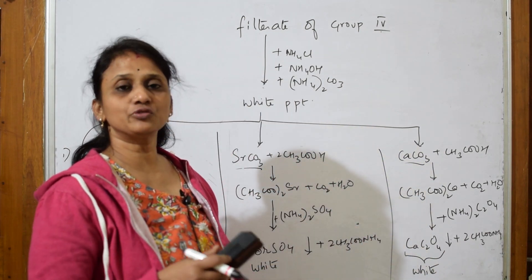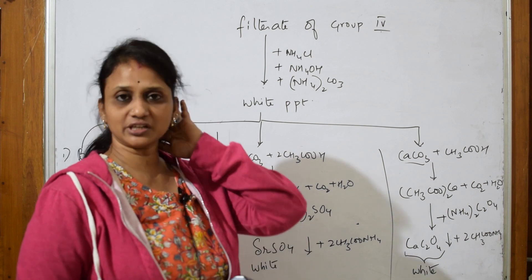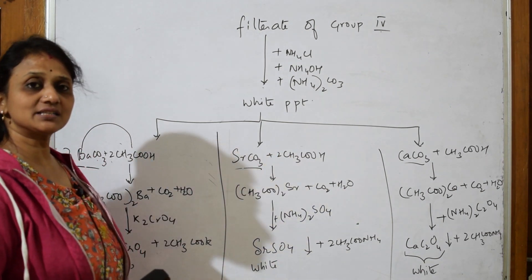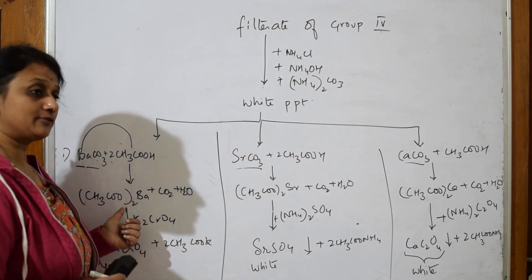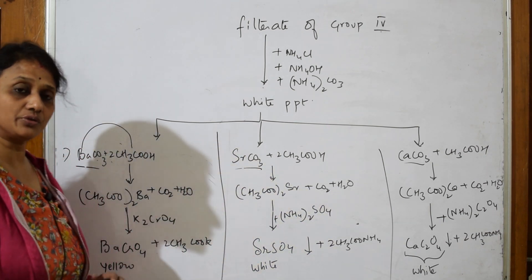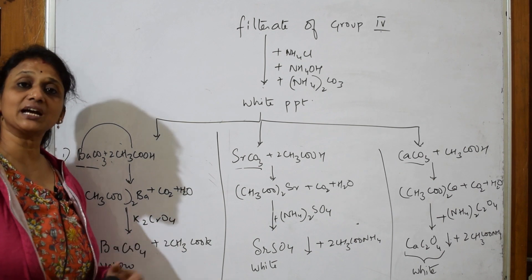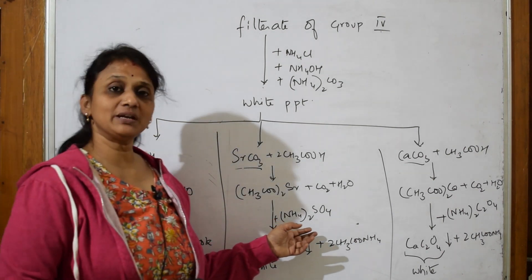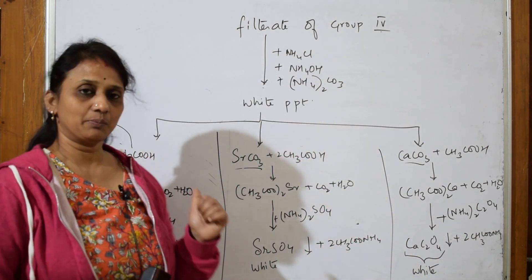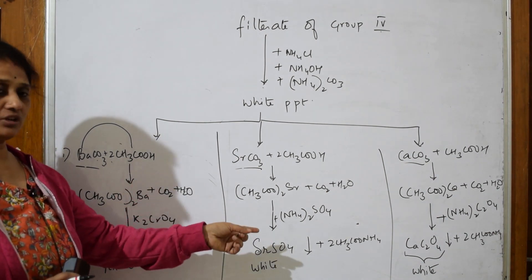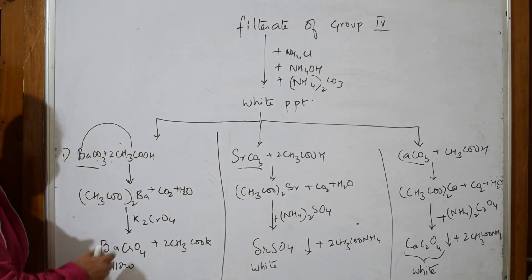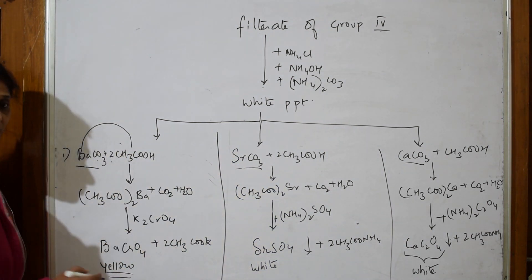Divide the white precipitate into three equal portions in three separate test tubes and add acetic acid to each. This forms barium acetate, strontium acetate, and calcium acetate respectively, with CO₂ and water as common byproducts. Then: to the first test tube add potassium chromate, to the second add ammonium sulfate, to the third add ammonium oxalate.